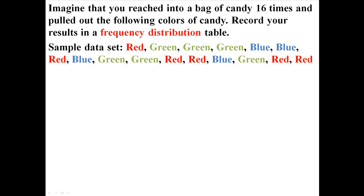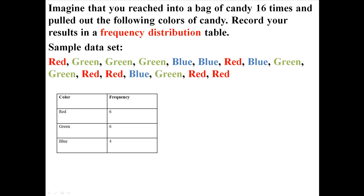So we could pretty easily organize it into a table like that where we have red, green, and blue. And you can see the frequency of each of the pulls that we pulled out: six reds, six greens, and four blues.